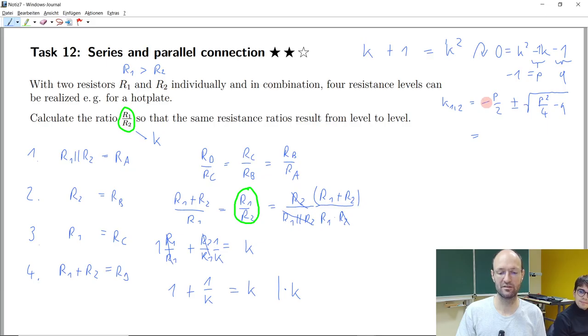So with another minus gives us plus, plus one over two plus minus the square root of one over two squared is one over four and minus minus one is plus one. And so we have then two solutions.